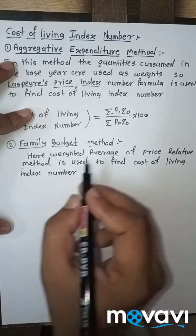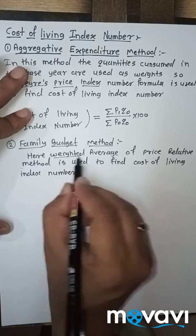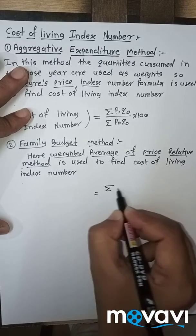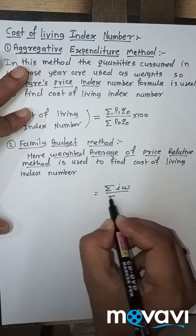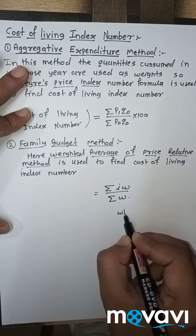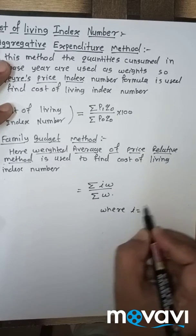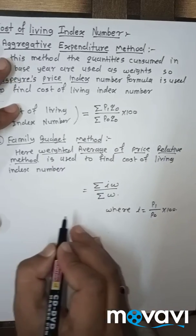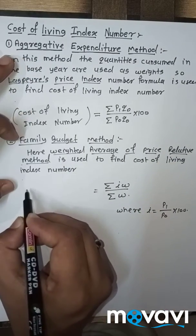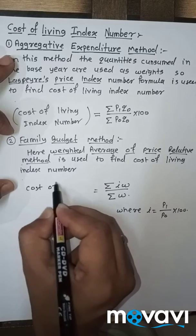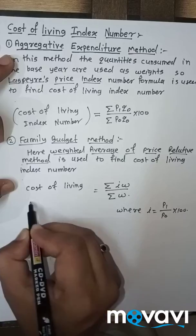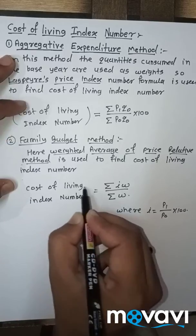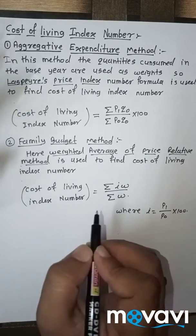The formula to find index number by weighted average of price relative method is: summation IW upon summation W, where I is P1 upon P0 into 100. This is the formula of cost of living index number by using the family budget method.